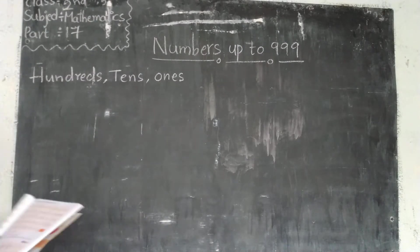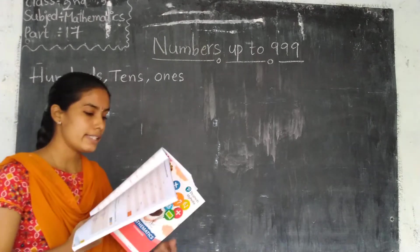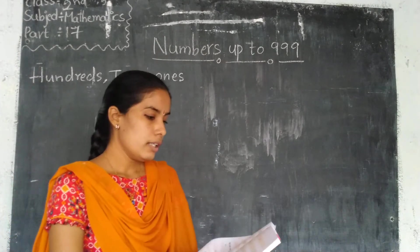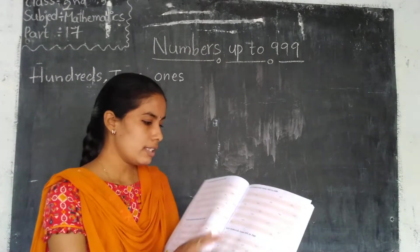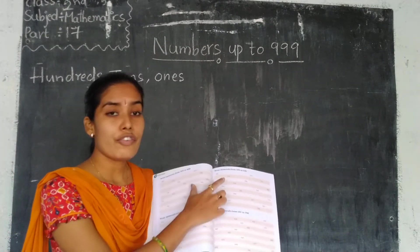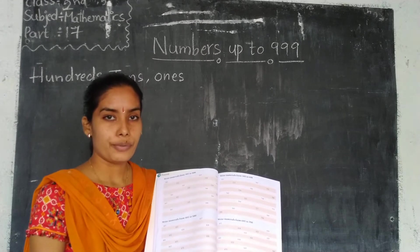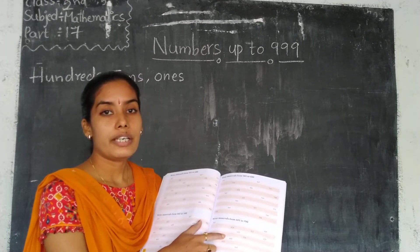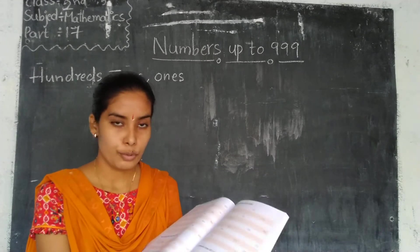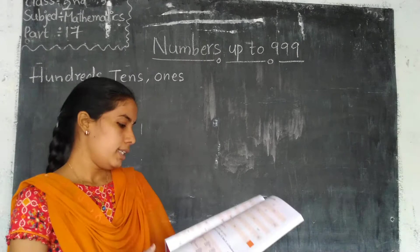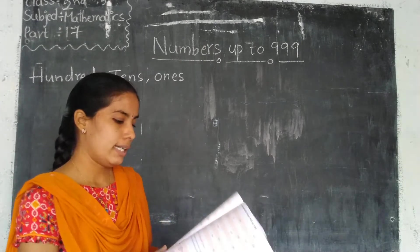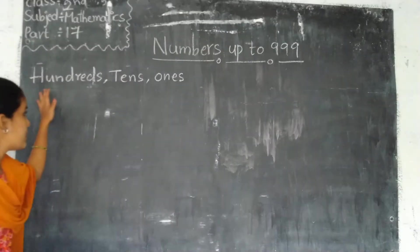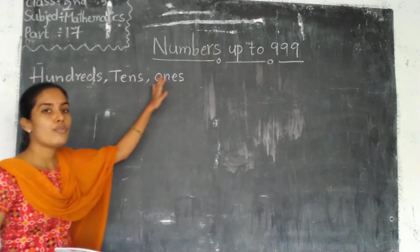Students, numbers up to 999 — this is your worksheet. You compulsorily have to write and submit in our WhatsApp group. Okay? Next topic: Hundreds, Tens, Ones.